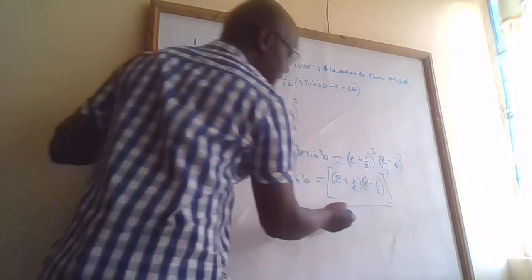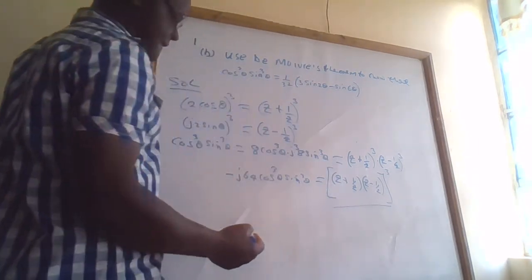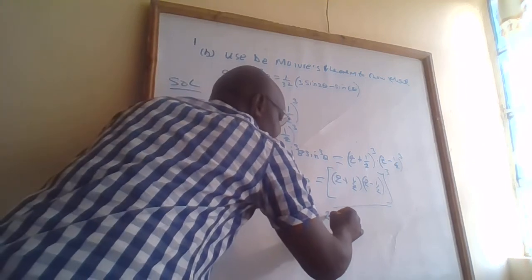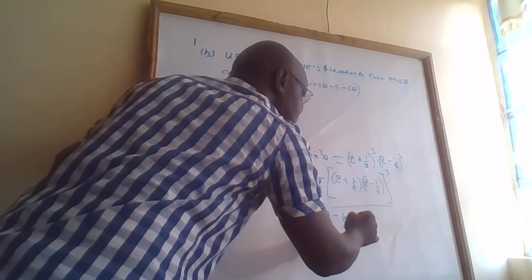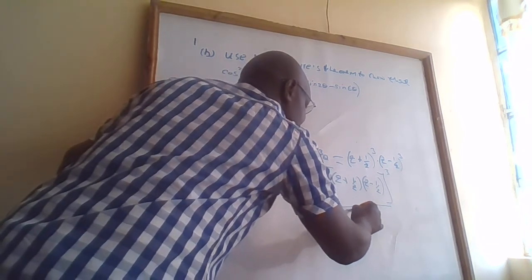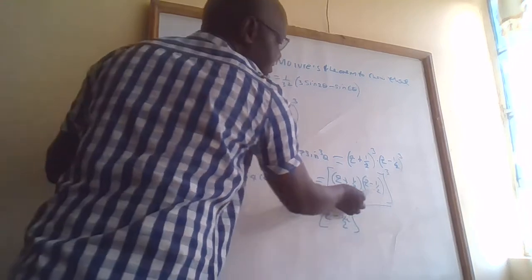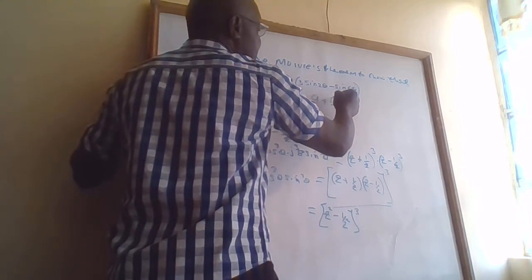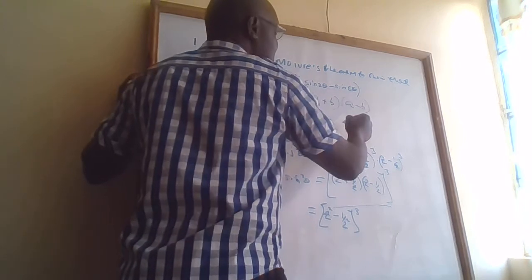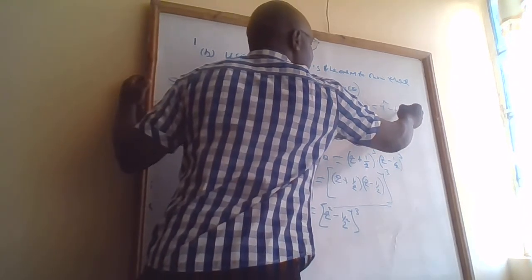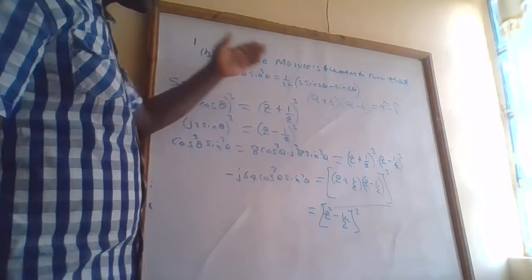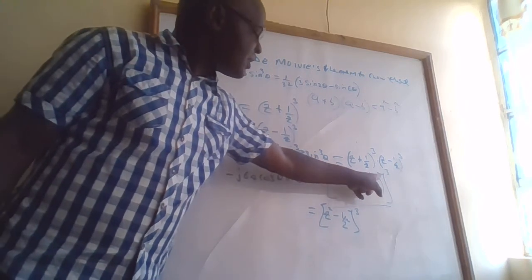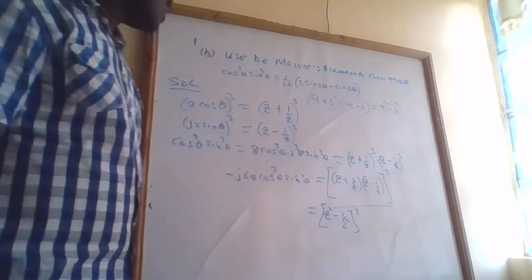We can write this as (z - 1/z) squared over z, cubed. Remember, this uses the difference of two squares: when you take (a + b)(a − b) you get a² − b². Applying this concept, we expand to get (z² − 1/z²) cubed.